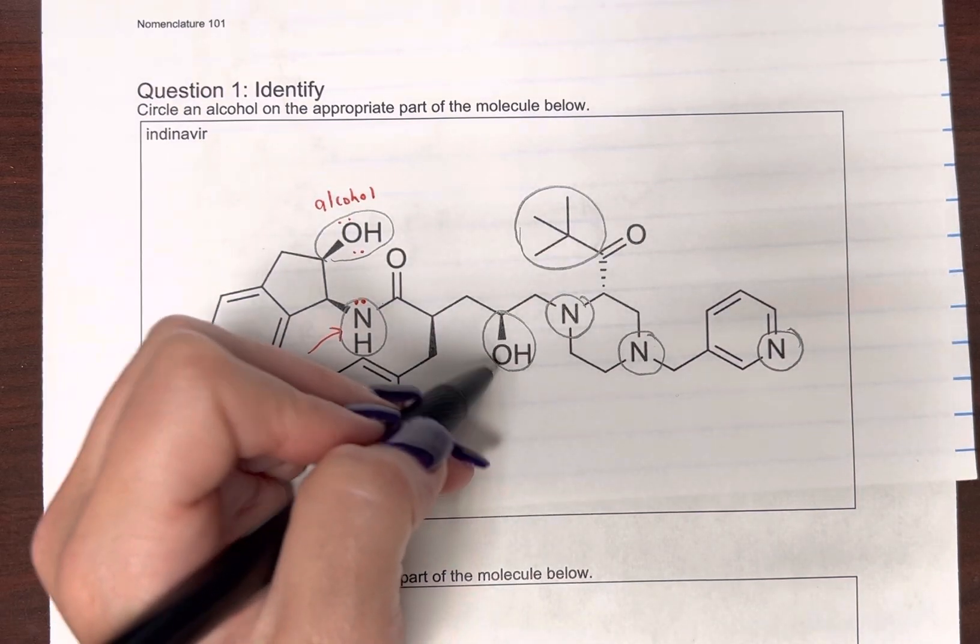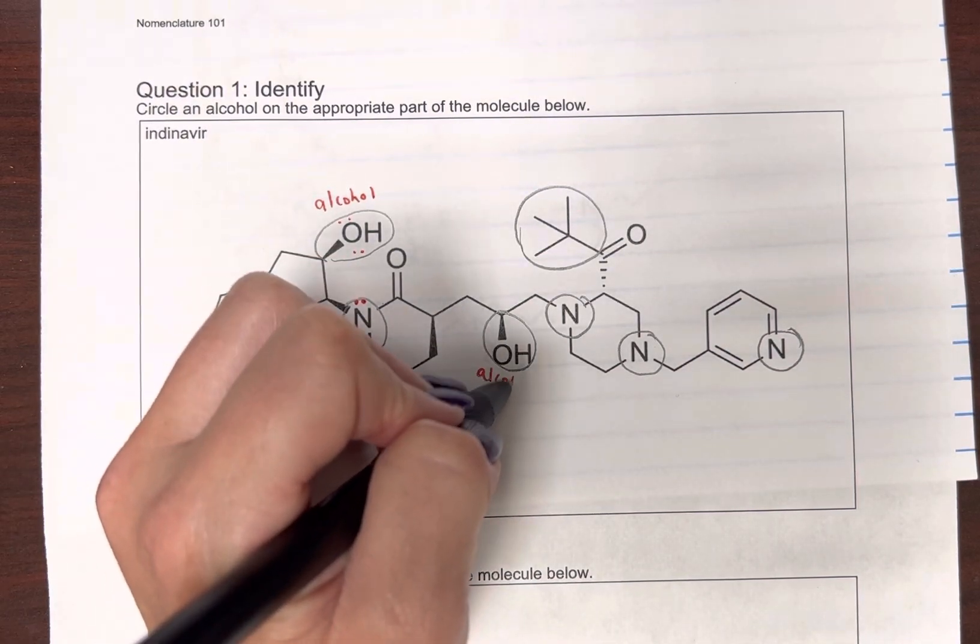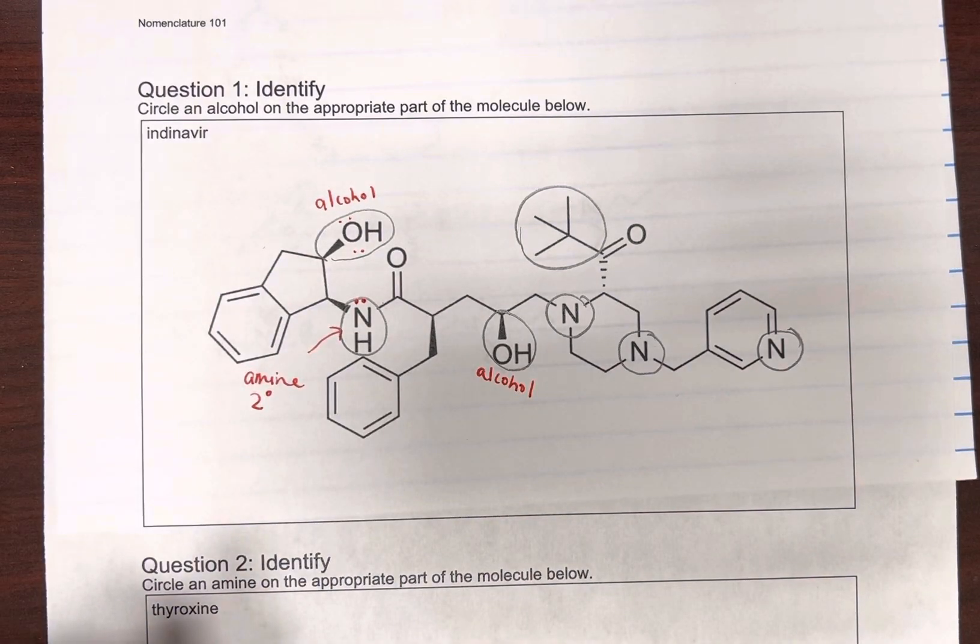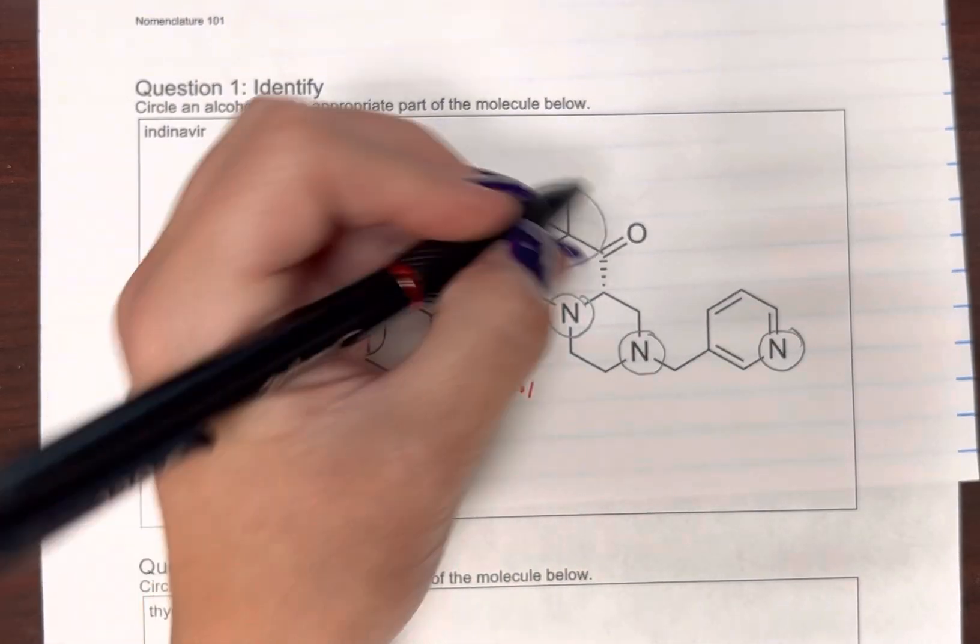Looking at this one, this is another alcohol. Alcohols are always easy to find for me, so I like to kind of do those first. Okay, this here, this is another amine.